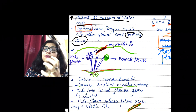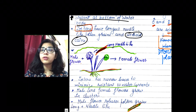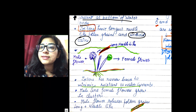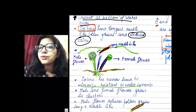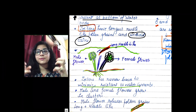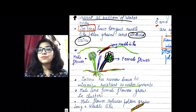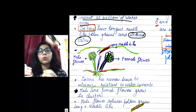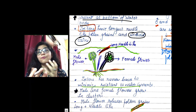Male and female flowers — how they grow is important because you have to draw the diagram in your exam. The male flower and female flower both grow in groups, in clusters. That is why the key point is that they grow in groups.